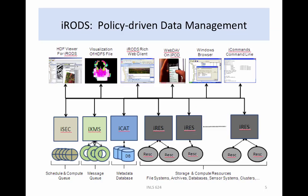The iRODS DataGrid architecture is shown here. The DataGrid implements peer-to-peer servers that can exchange operations. A new storage server can be added to the DataGrid without any modifications to the existing storage servers. Information about the new server is entered into the metadata catalog. The new server can be added to a group of storage resources, and the system will automatically store data in the new server.